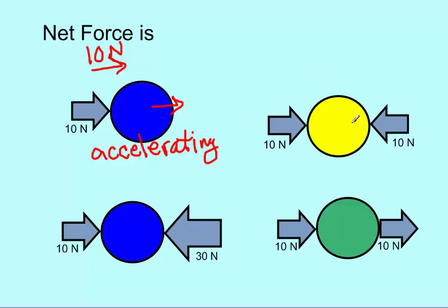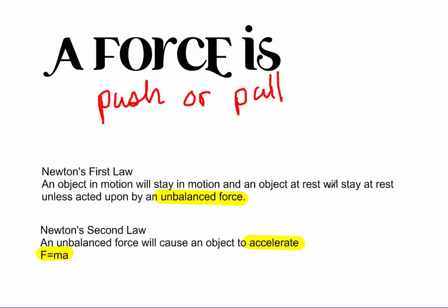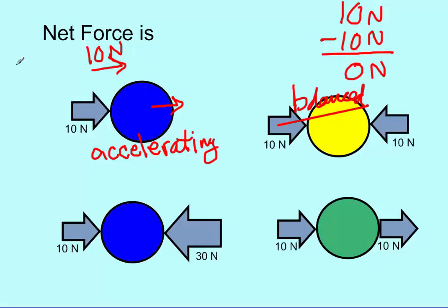If we look at this ball, we see there's 10 newtons to the right but also 10 newtons to the left. So 10 newtons minus 10 newtons — because they are opposite one another — leaves us with a net force of 0 newtons. So this one is balanced. When it's balanced, Newton's first law says it's going to keep doing whatever it was doing. It's not accelerating, so it's moving at a constant speed. That speed may be 0, or it might be 1000 meters per second — we don't know. All we know is that it's moving at a constant speed.